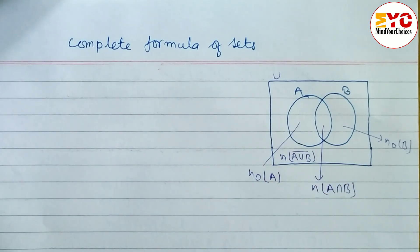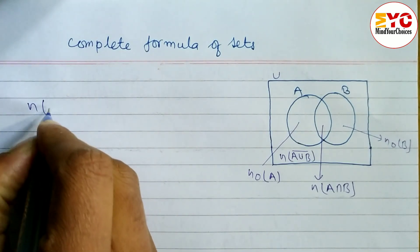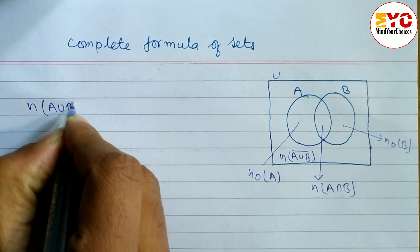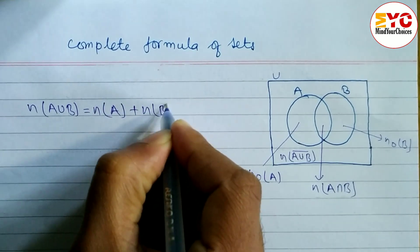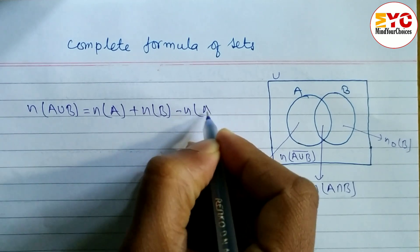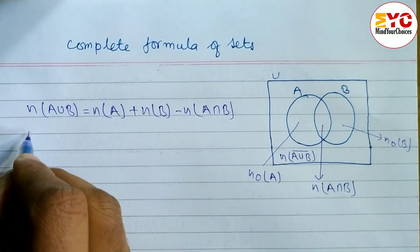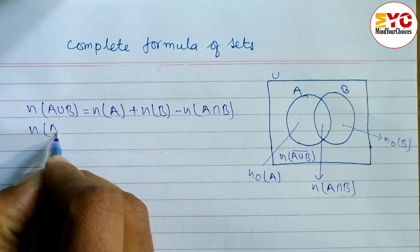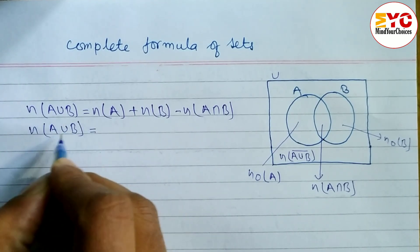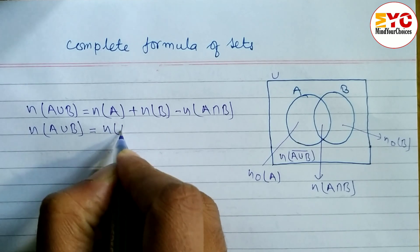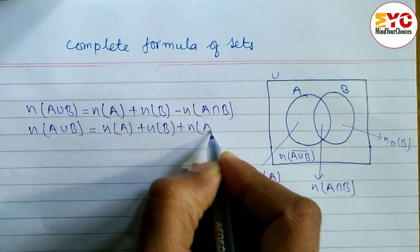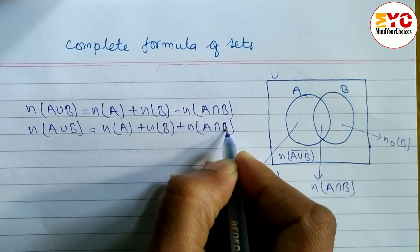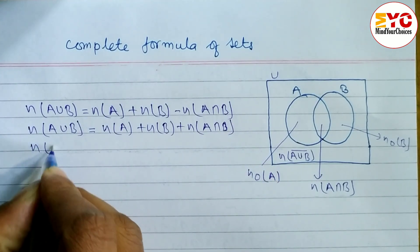First of all, try to understand this diagram. Now the formula: the first formula is n(A union B), and the formula is n(A) plus n(B) minus n(A intersection B). Similarly, the next formula — we have three formulas of A union B. Another formula of n(A union B) is n(A) plus n(B) plus n(A intersection B).